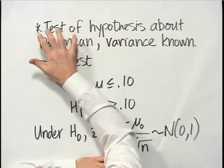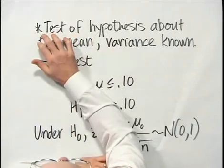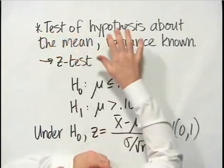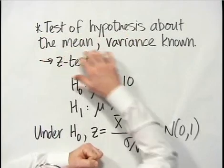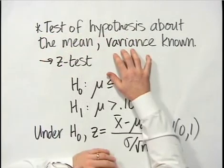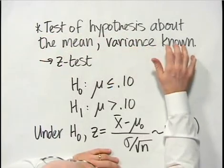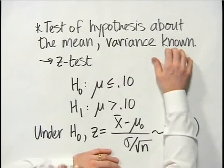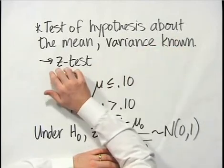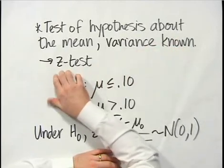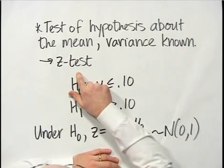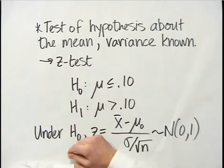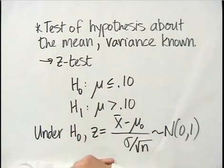So if we go to the board, I've written down the problem recognition line. This is a test of a hypothesis about the mean — only one mean — where the variance of the population is known. In this situation, that implies that you use the z-test. The z-test is based on the normal distribution and forms the so-called z-statistic.